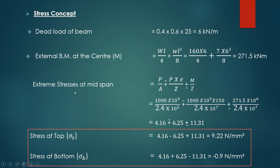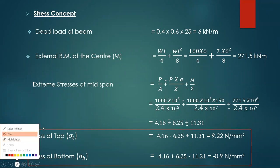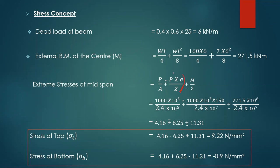After getting the moment value, we put it into the formula: P/A ± Pe/Z ± M/Z. Here Pe/Z accounts for eccentricity, and M/Z is for the external bending moment. P is the pre-stressing force of 1000 kN, eccentricity is 150 mm, section modulus is 2.4 × 10⁷ mm³, and moment is 271.5 × 10⁶ N·mm — all converted to Newtons and millimetres.